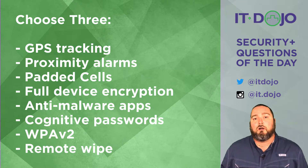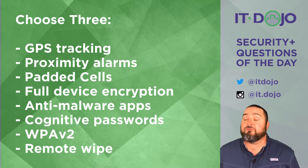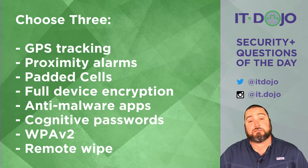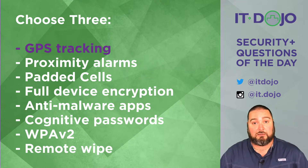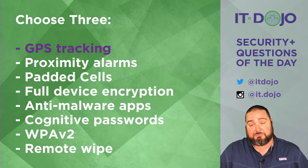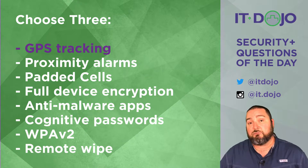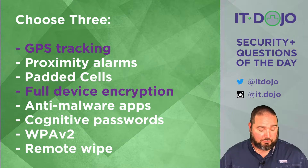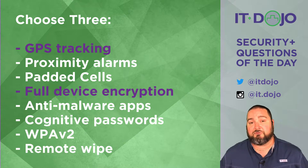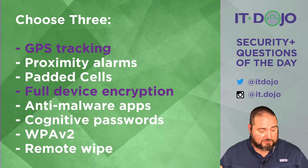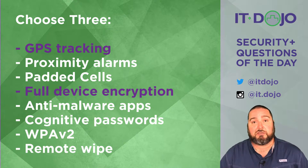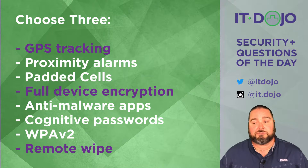The best answer choices you're looking for here are: GPS tracking — the ability to know where somebody is because there's a GPS radio built into the overall majority of mobile devices out there. Second would be full disk encryption — both iOS and Android implement full disk encryption. And the third answer choice would be a remote wipe feature.